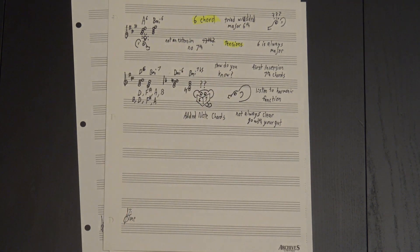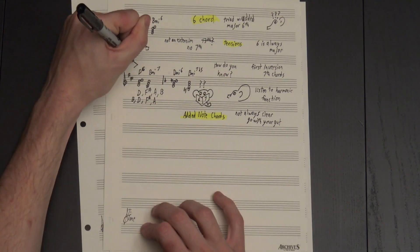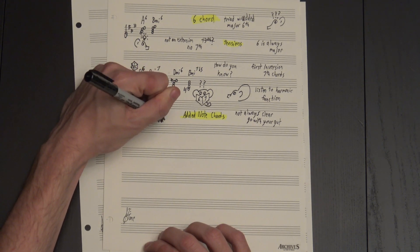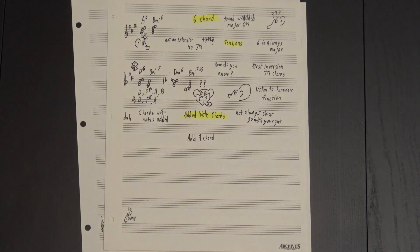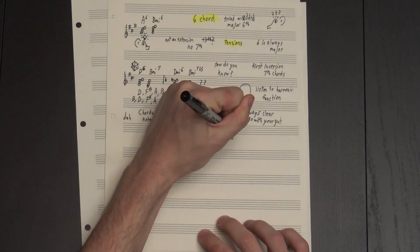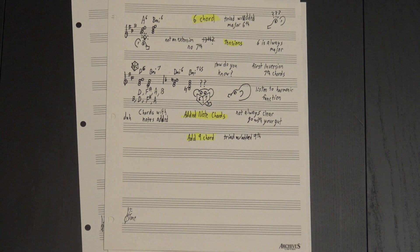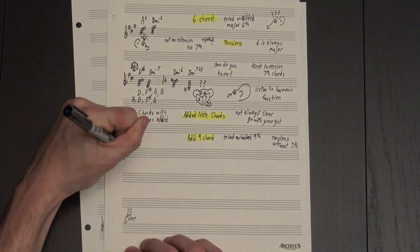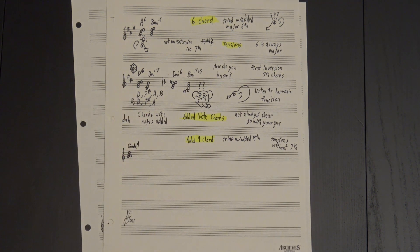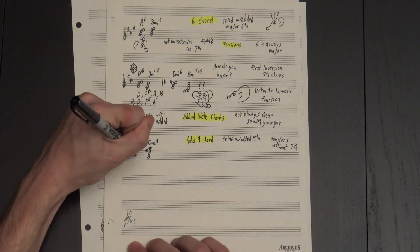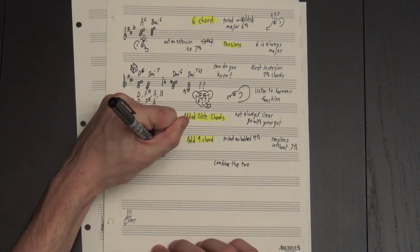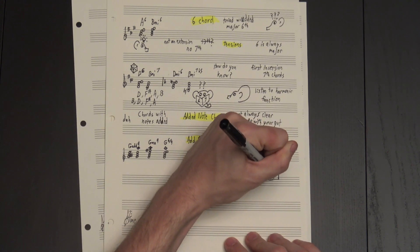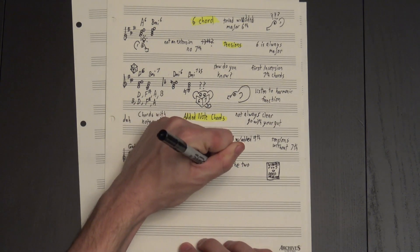Six chords are one example of a larger class known as added note chords. These are what they sound like: chords, usually triads, with one or more additional notes added. The other most popular type is the add9 chord, which is a triad with an added 9th. This gives you the benefit of tensions without dealing with the consequences of the 7th degree. Compare this G add9 to this G major 9. You can also combine the two, making a 6/9 chord. As for why we call this one a 9 when we don't call the other one a 13 — don't worry about it. Tradition is weird sometimes.